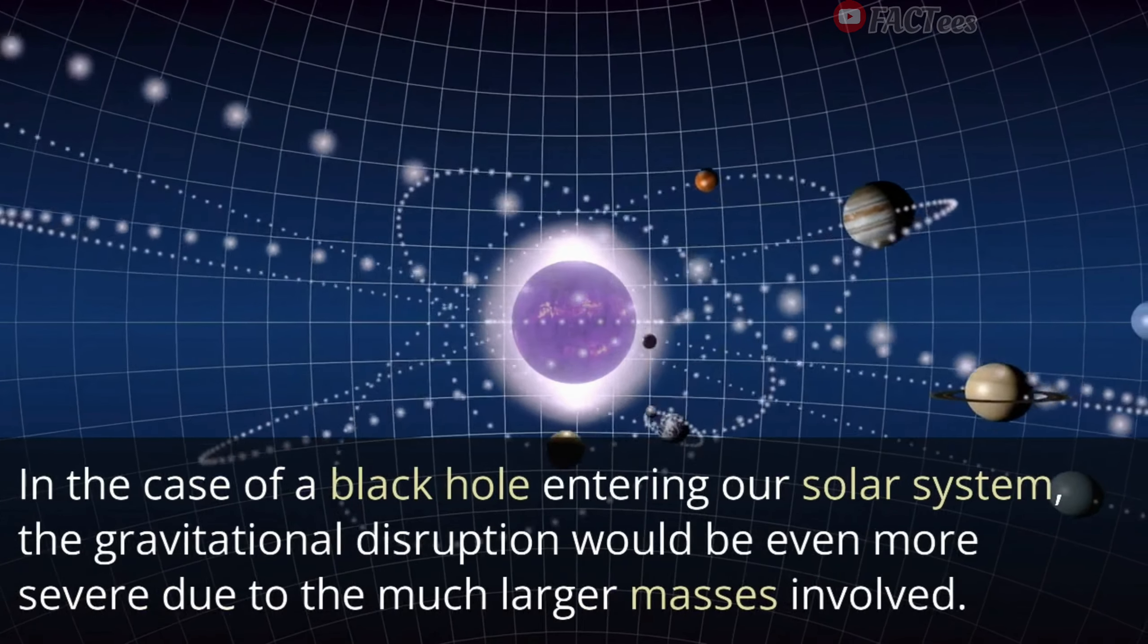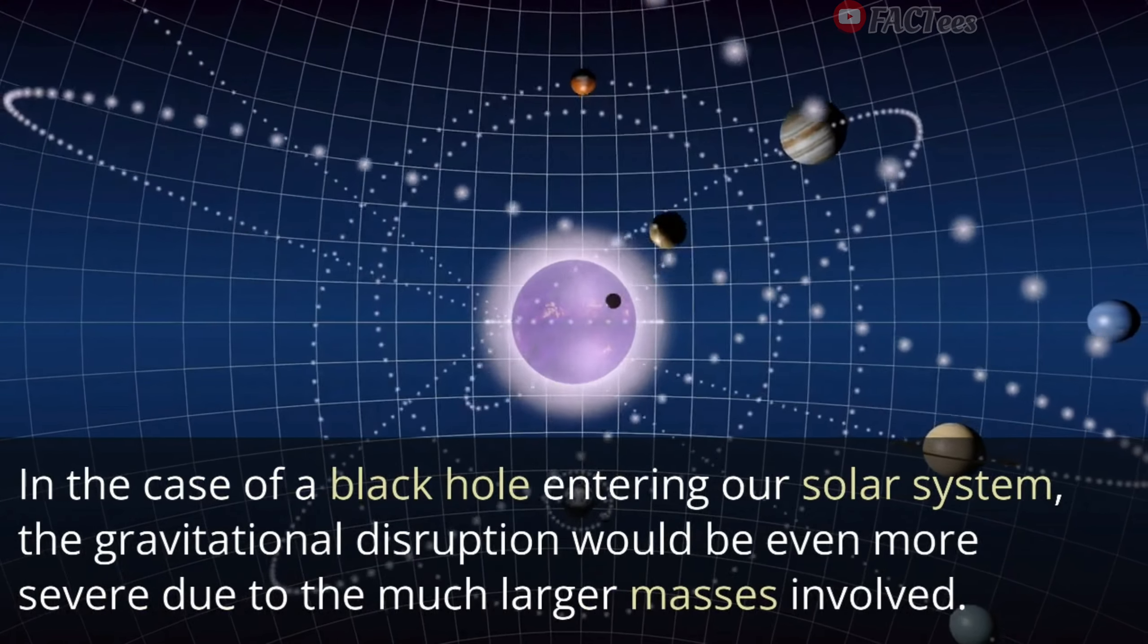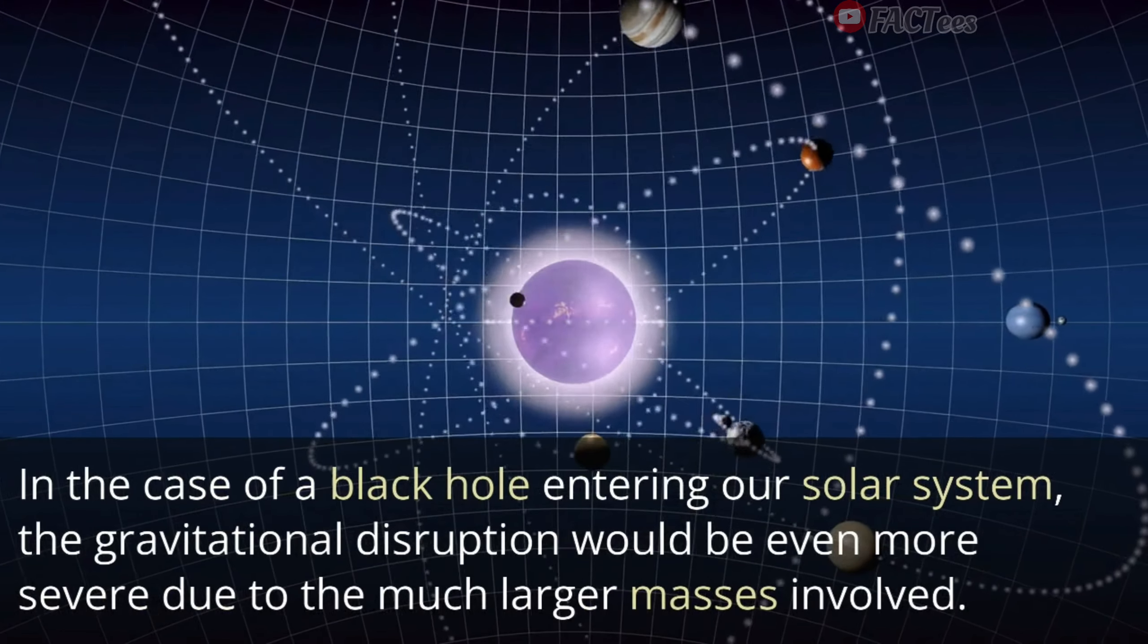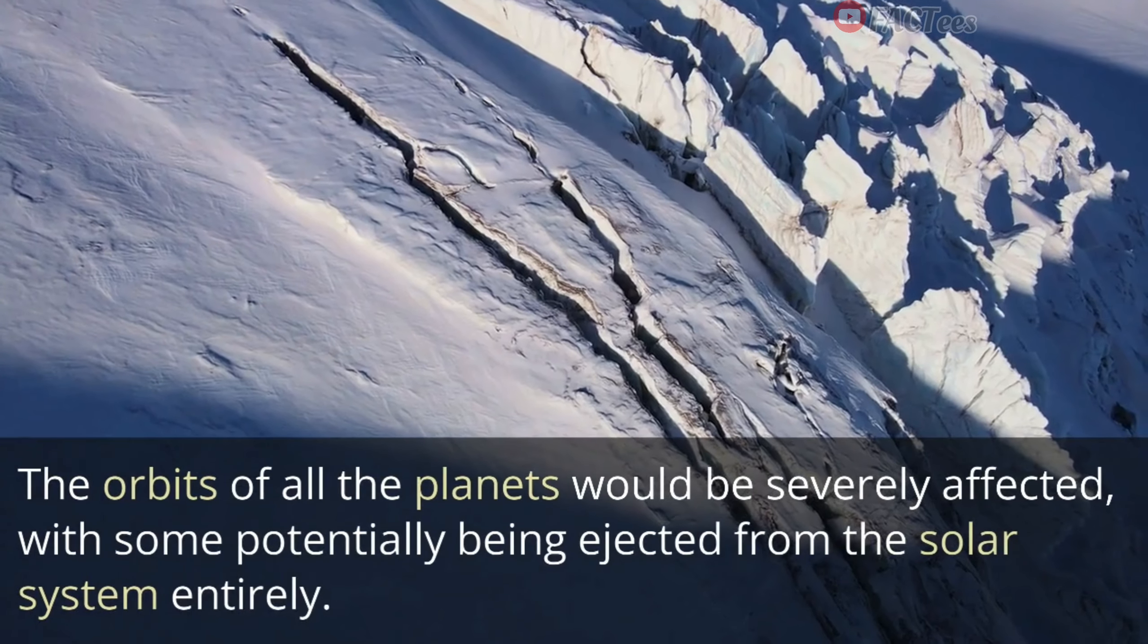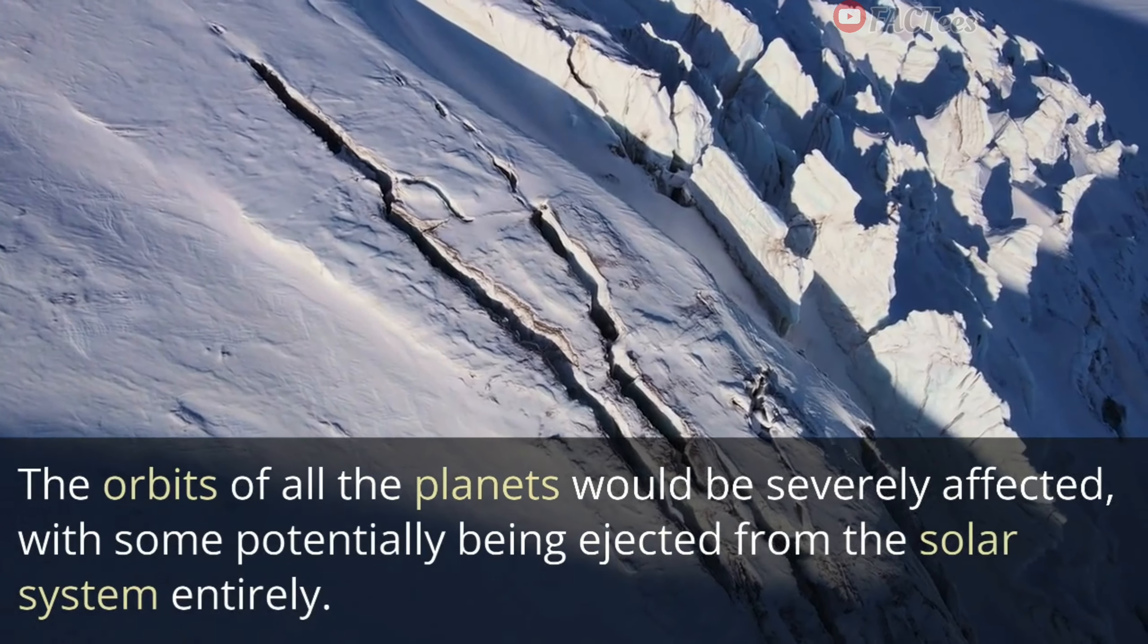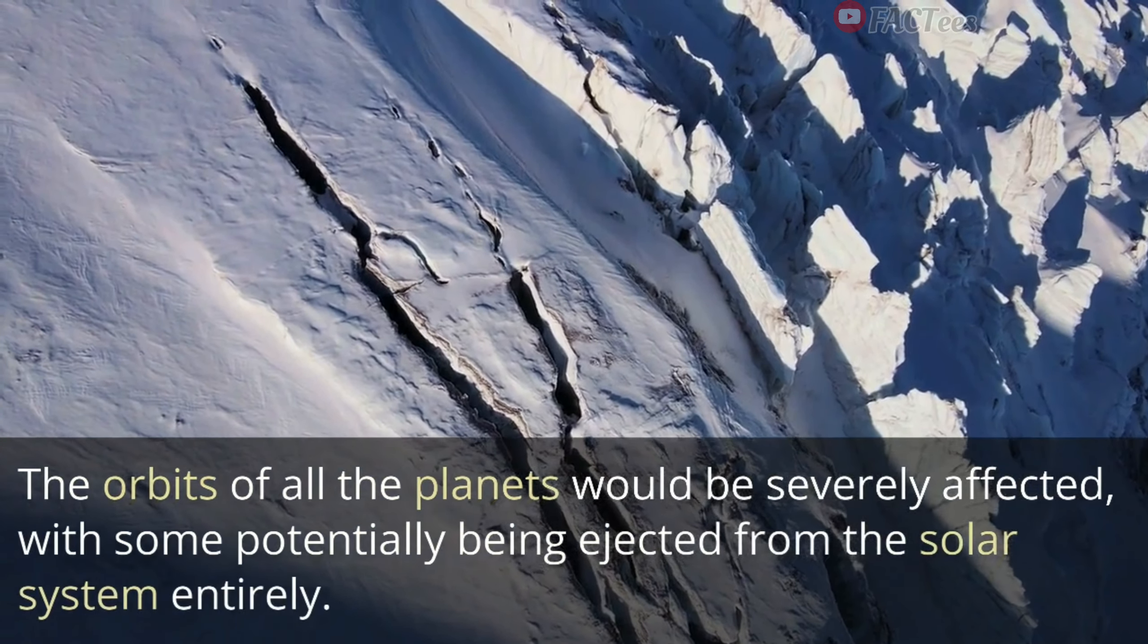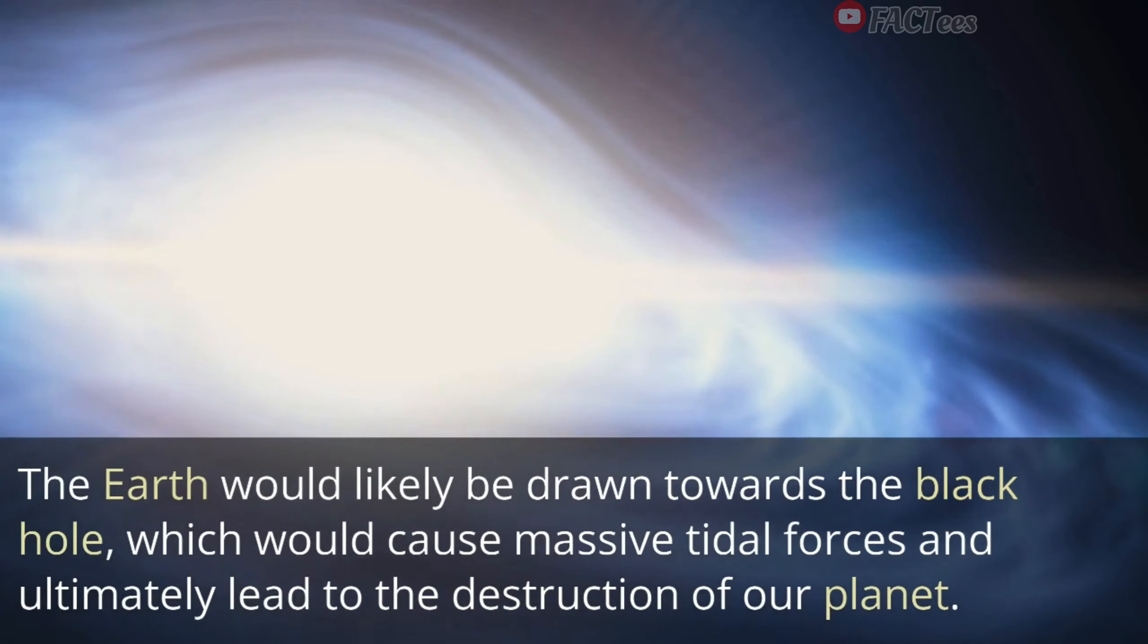In the case of a black hole entering our solar system, the gravitational disruption would be even more severe due to the much larger masses involved. The orbits of all the planets would be severely affected, with some potentially being ejected from the solar system entirely. The Earth would likely be drawn towards the black hole, which would cause massive tidal forces and ultimately lead to the destruction of our planet.